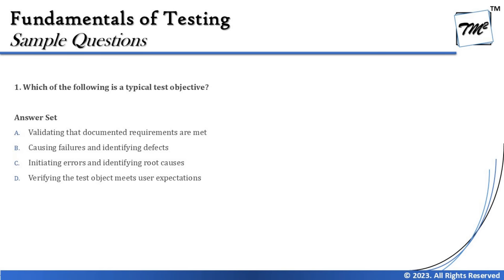Option A says: validating that documented requirements are met. This is a little tricky. When we talk about validating, it's more about executing test cases, whereas verification is more about statically going through documentation and reviewing it to make sure it is correct. Making sure documented requirements are met is tricky because that talks about whether we've developed it into the application — so validating documented requirements are met is an ambiguous statement here.